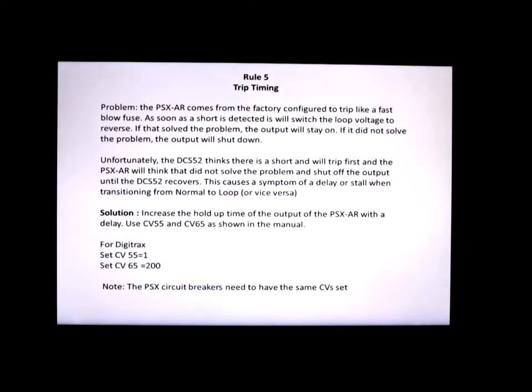Okay, rule number five, trip timing. Again, the auto reverser comes from the factory configured to trip like a fast blow fuse. As soon as the short is detected, the auto reverser will switch the loop voltage to reverse. If it thinks that solved the problem, the output will stay on. If it did not solve the problem, the output will shut down. Unfortunately, that's what happens, because the DCS-52 thinks there's a short and trips first, and the auto reverser thinks it didn't solve the problem, and it shuts off the output. So this causes a symptom of when the loco goes across the transition point, it stalls and then starts up again, or it stalls and stays stalled, basically turns off. And that happens at the transition points from going from normal to loop or vice versa. So how do we fix this?